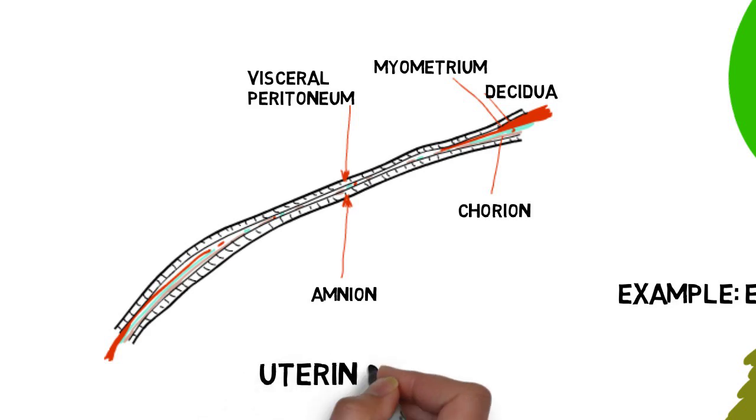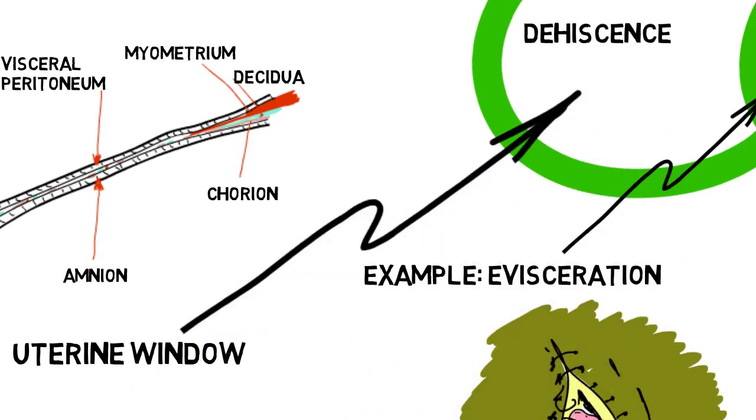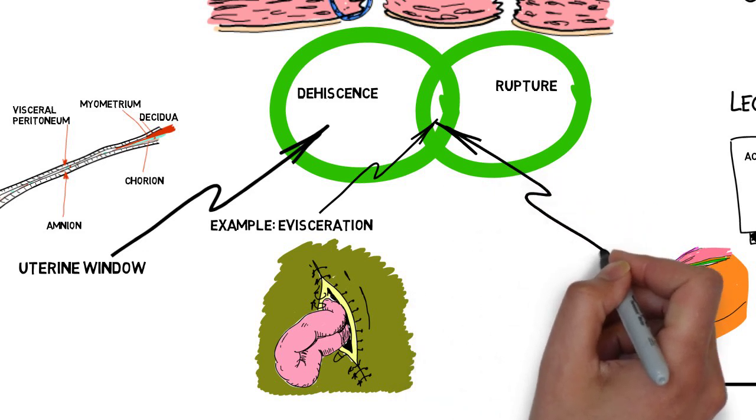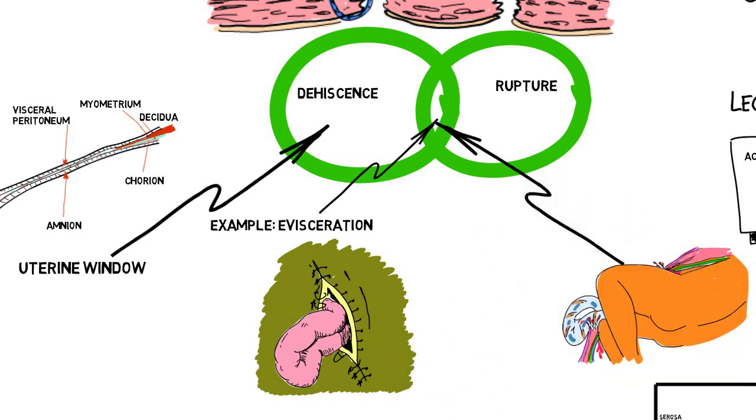Clinically, the most catastrophic scenario is uterine rupture with placental extrusion. The myometrium contains the maternal vessels. Disruption leads to maternal bleeding and may interrupt the supply to the inner villus space the same way a retroplacental hematoma does with abruption.